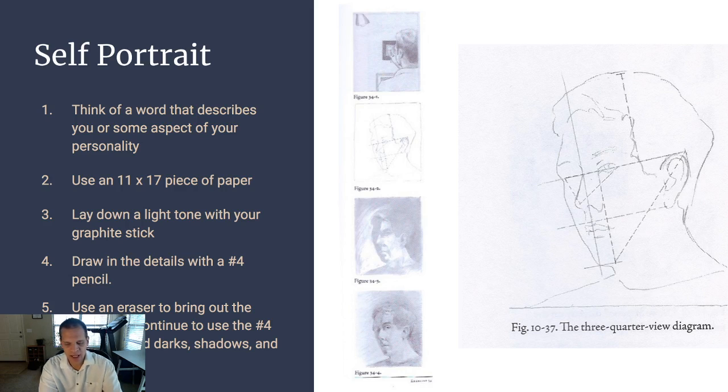You'll make a frame like with the previous assignments. Maybe instead of a 6 by 8 frame, you want to make a 10 by 12 frame or 11 by 13 size frame. More like a 10 by 12. You'll make a frame that will fit the format of that 11 by 17 page. Then you'll use a graphite stick again to lay down the groundwork of the box or the format that you're going to draw your face in.